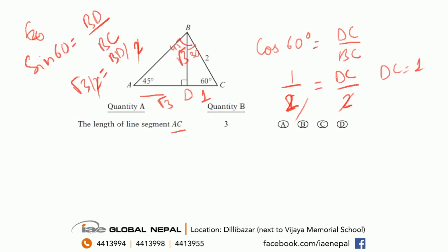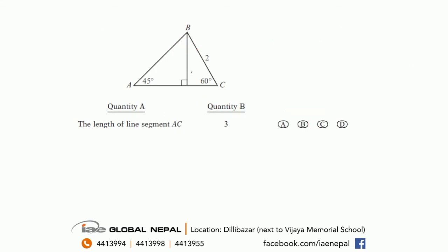So this AC will be equal to root 3 plus 1. And comparing these two, this will have to be less, so the answer is B. But this, which we just realized, is a very long way to do it. So let's look at another way. Here 60, 30 opposite is 1, 60 opposite is root 3. Here 45, so it's root 3 again. So AC is equal to root 3 plus 1, which is less than 3. So mugging this up will come in very, very handy.